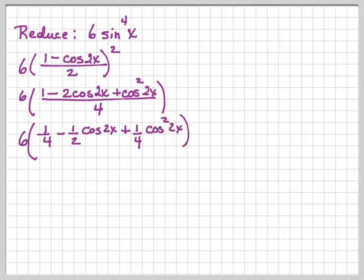So I'm going to separate it out. So I'll have 1 fourth minus 2 fourths, which is 1 half cosine 2x plus 1 fourth cosine squared 2x. So the only problem we have now is getting rid of the squared in the cosine squared 2x.